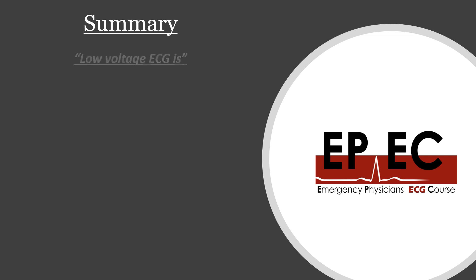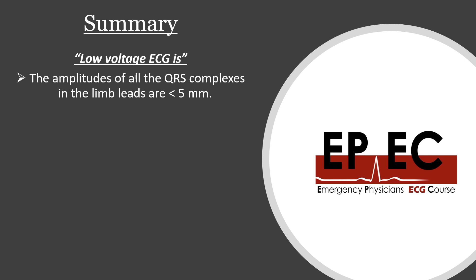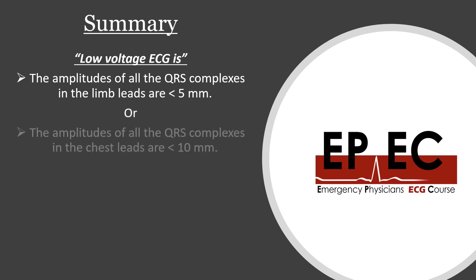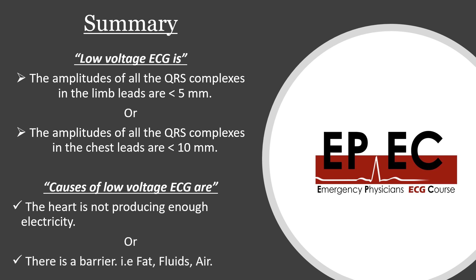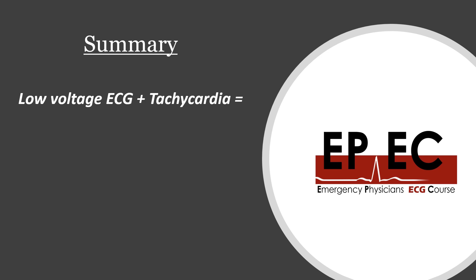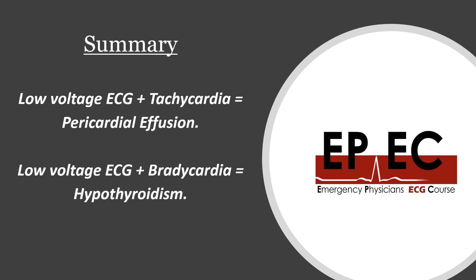In summary, we've talked about low voltage ECG — it is defined as the amplitude of all complexes in the limb leads less than five millimeters, or the amplitude of complexes in the chest leads less than 10 millimeters; either of the two is enough. Causes are either the heart not producing enough electricity — infiltration like amyloidosis or sarcoidosis, hypothyroidism, or significant loss of myocardium like advanced cardiomyopathy or massive MI — or there is a barrier of fat, fluids or air. Low voltage with tachycardia is pericardial effusion until proven otherwise; low voltage with bradycardia is hypothyroidism until proven otherwise.